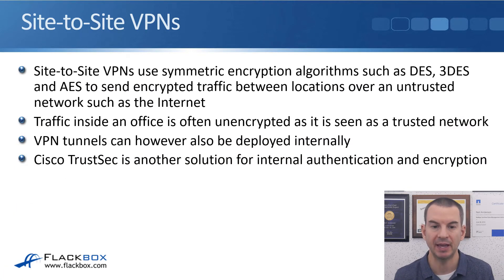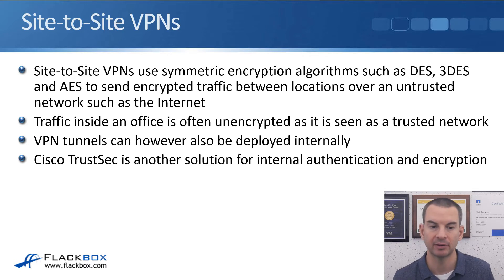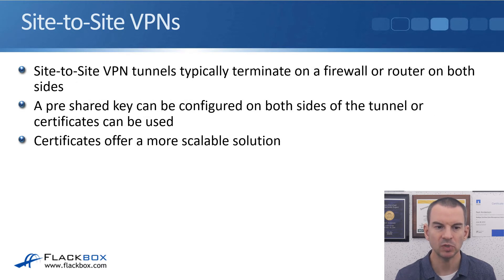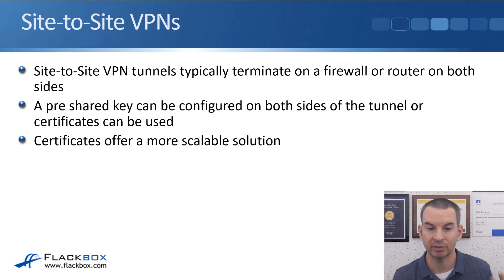Site-to-site VPNs use symmetric encryption algorithms such as DES, triple DES, and AES — more likely to be AES nowadays — to send encrypted traffic between locations over an untrusted network such as the internet. Traffic inside an office is often left unencrypted as inside the office is often seen as a trusted network. However, VPN tunnels can also be deployed internally, and Cisco TrustSec is another more manageable solution for internal authentication and encryption, but it's not covered in the CCNA exam.